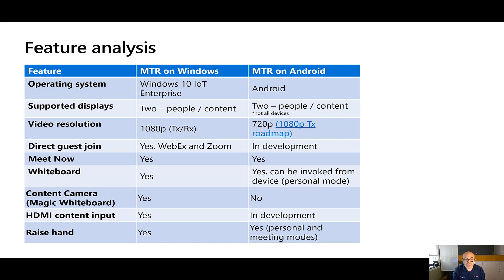Whiteboard is available across both platforms. When the MTR on Android device is deployed in Personal Mode — which we'll cover later — you can actually initiate the Whiteboard from the device, as opposed to it being initiated from a meeting attendee. The Content Camera, or Magic Whiteboard as it's known, is not available on the Android platform — it is available on Windows. Wired content ingest also requires the Windows MTR today, although it is in development for Android as well.